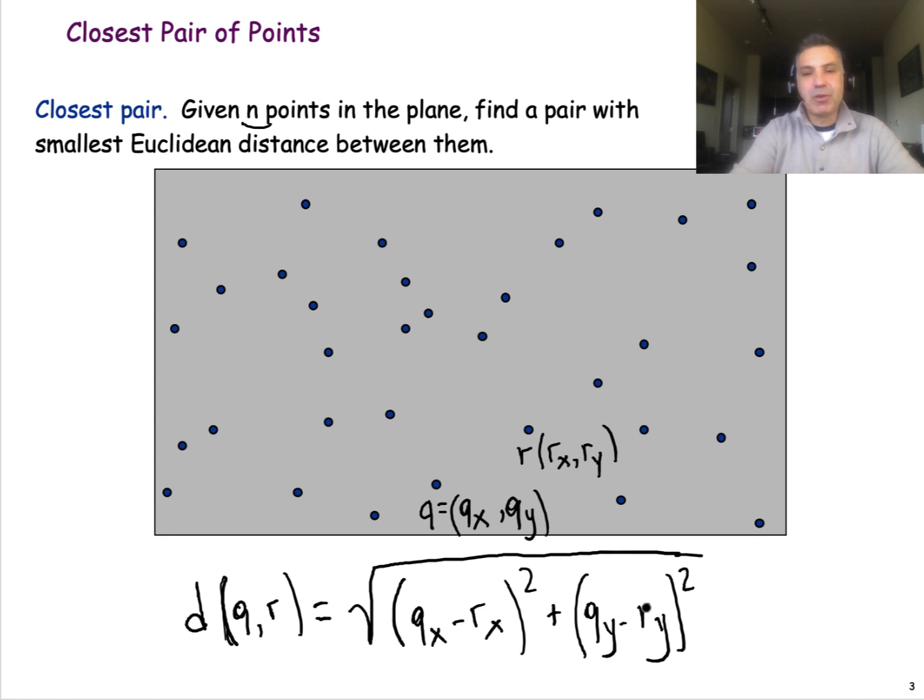This problem shows up in many applications, sometimes unexpected applications. In graphics, when you are doing rendering of objects, very often you need to know the pair of points that are closest together. And there are several other applications in geographic information systems and other things.